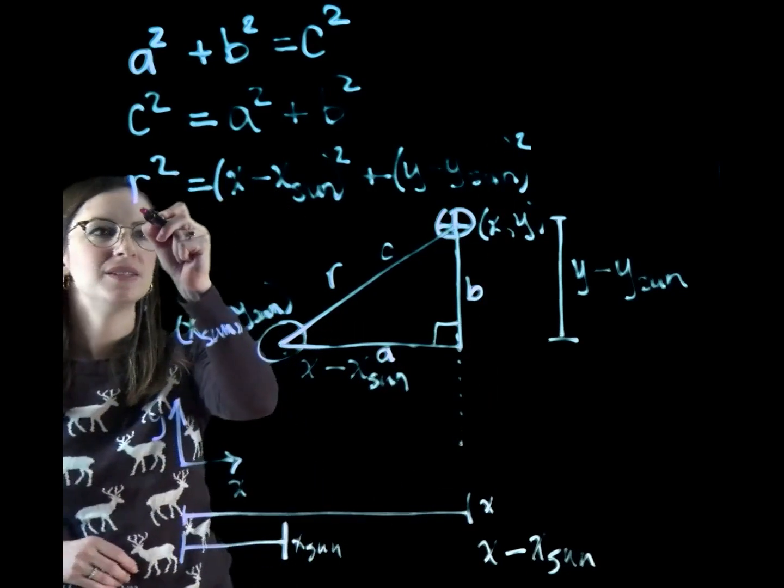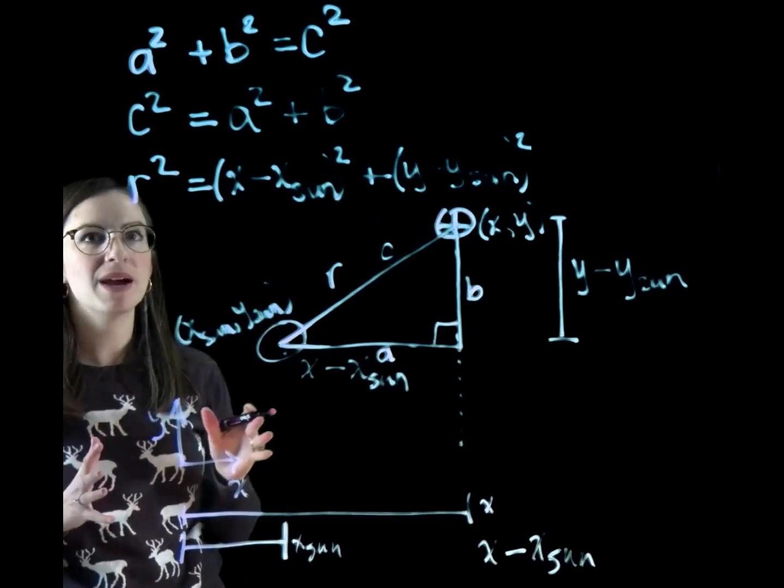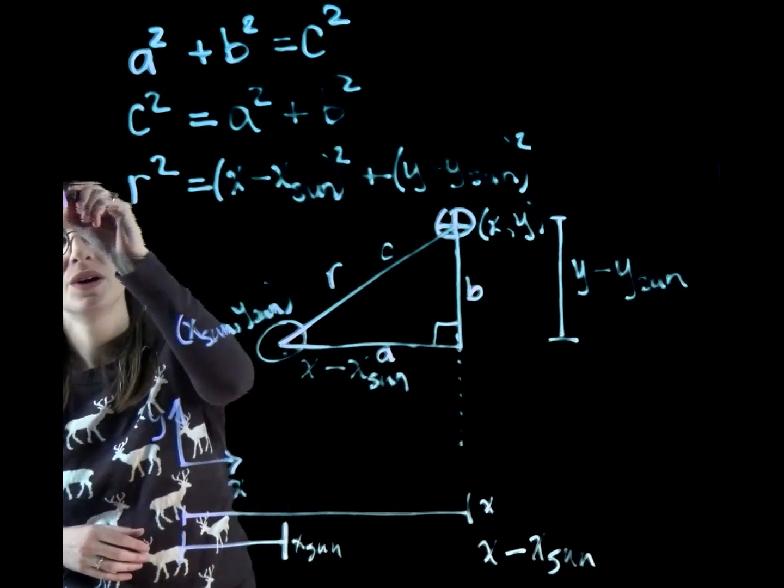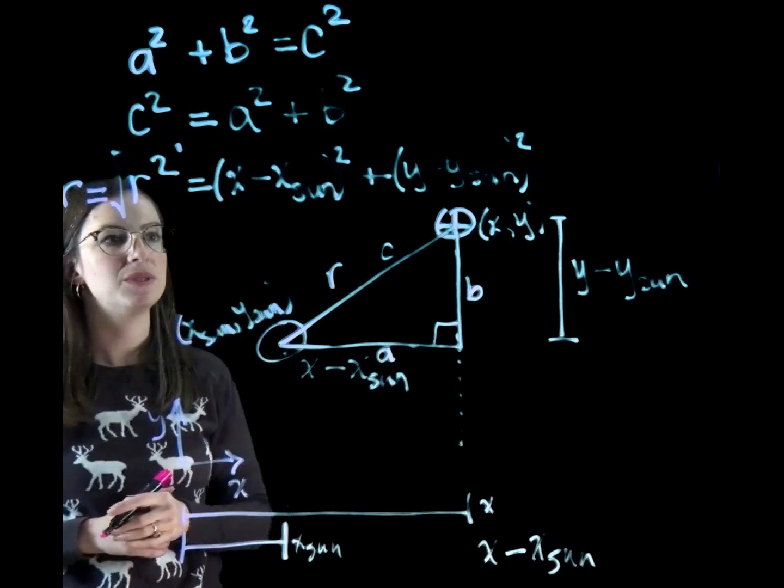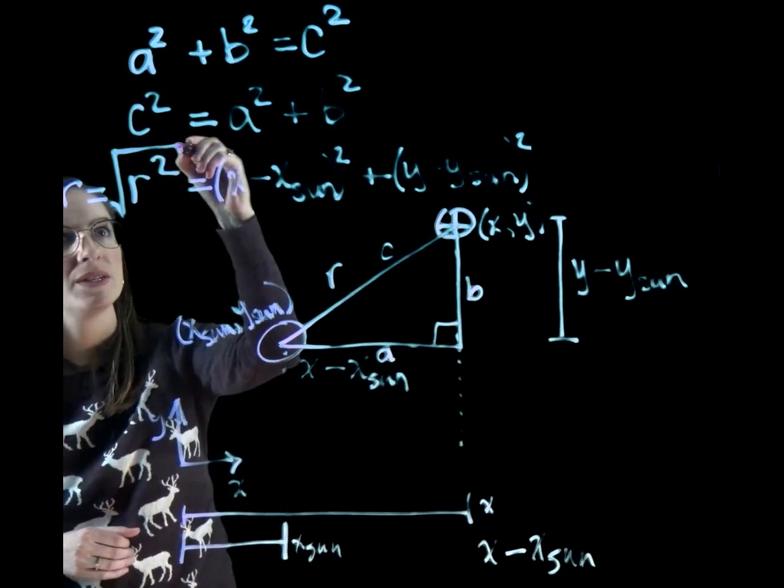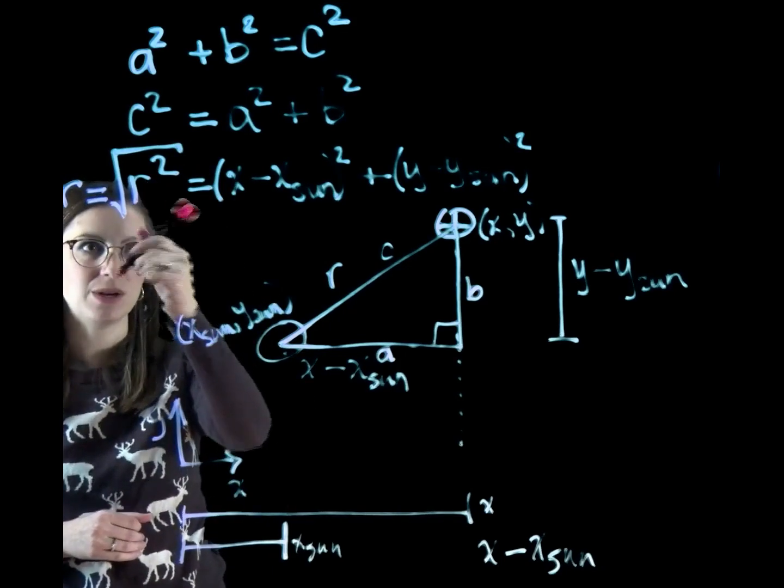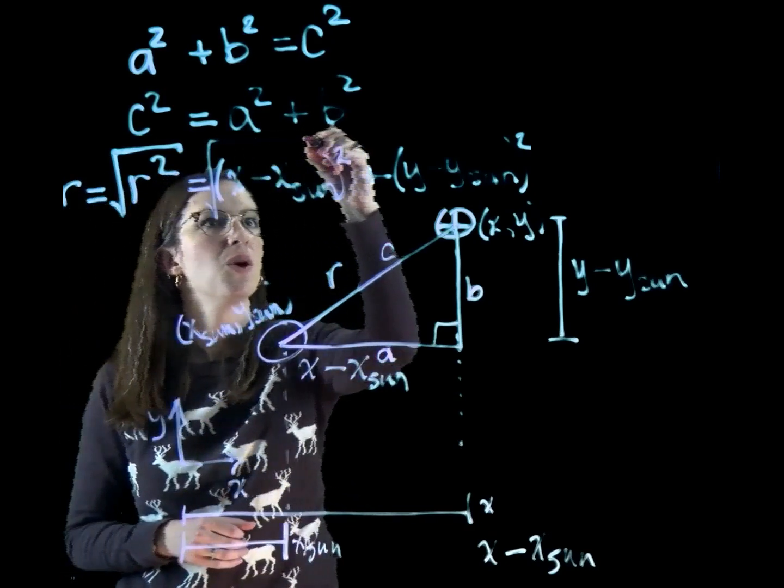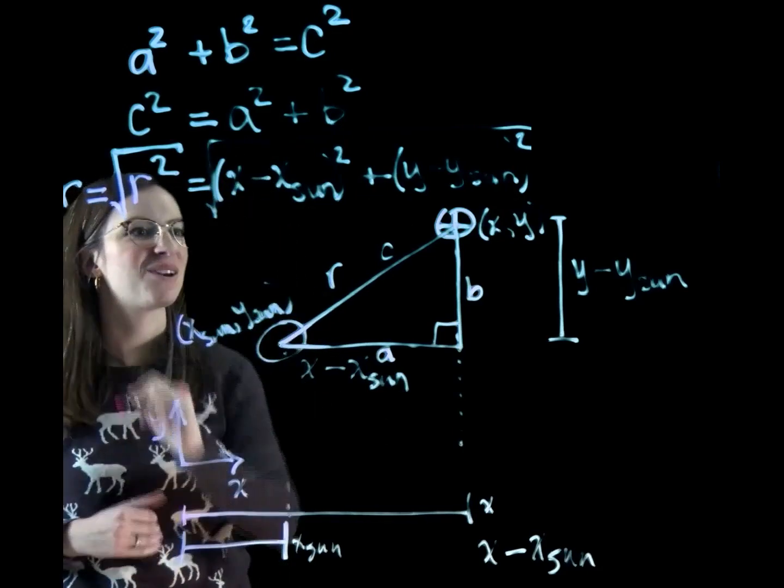So now we have this A squared plus B squared equals C squared. And for our code, we actually want r to just be in terms of r. So we're going to just do an r here equals the square root of, let's make that square root a little bit easier to see. Square root of r squared is just r. And that means we also have to square root this whole part of the equation here.